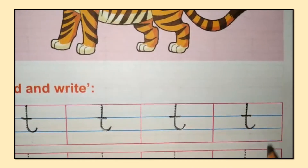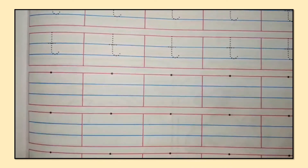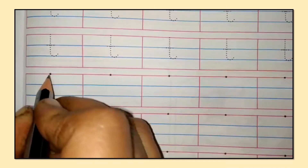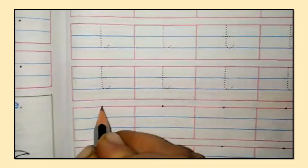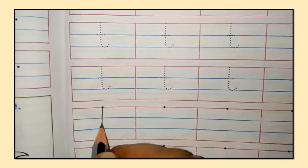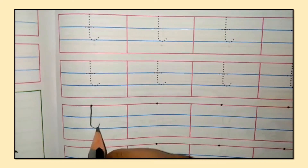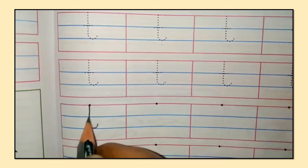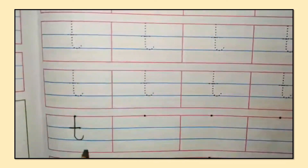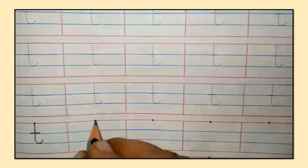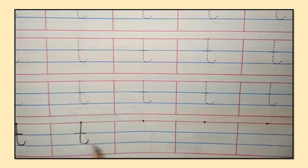Now we will write small T with the help of a single dot. Put your pencil on the dot, make a standing line, go down, then make a curve to the right side of the standing line, go to the middle, and make a small slipping line — that is small T.